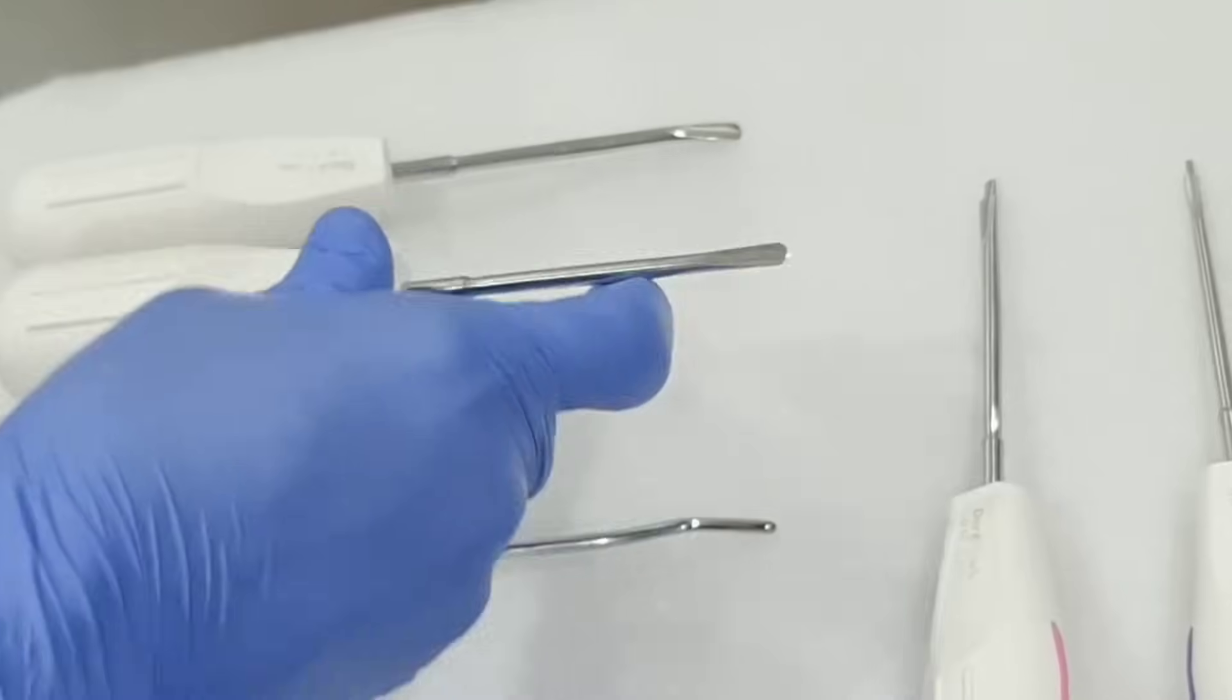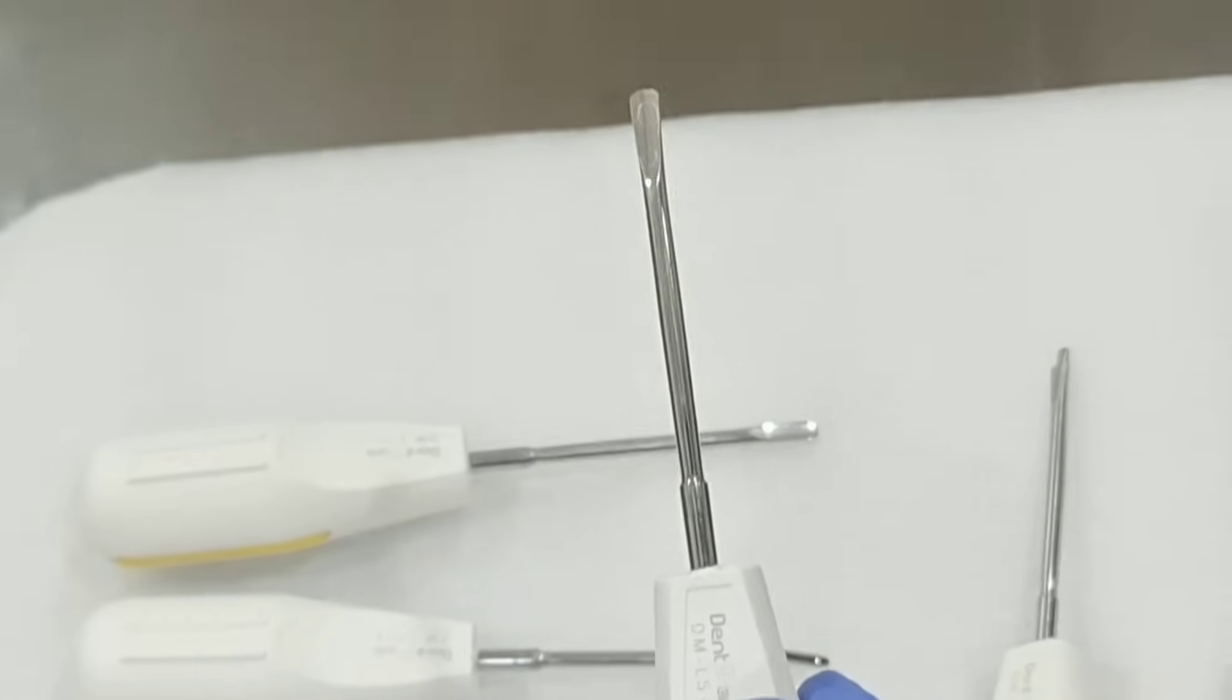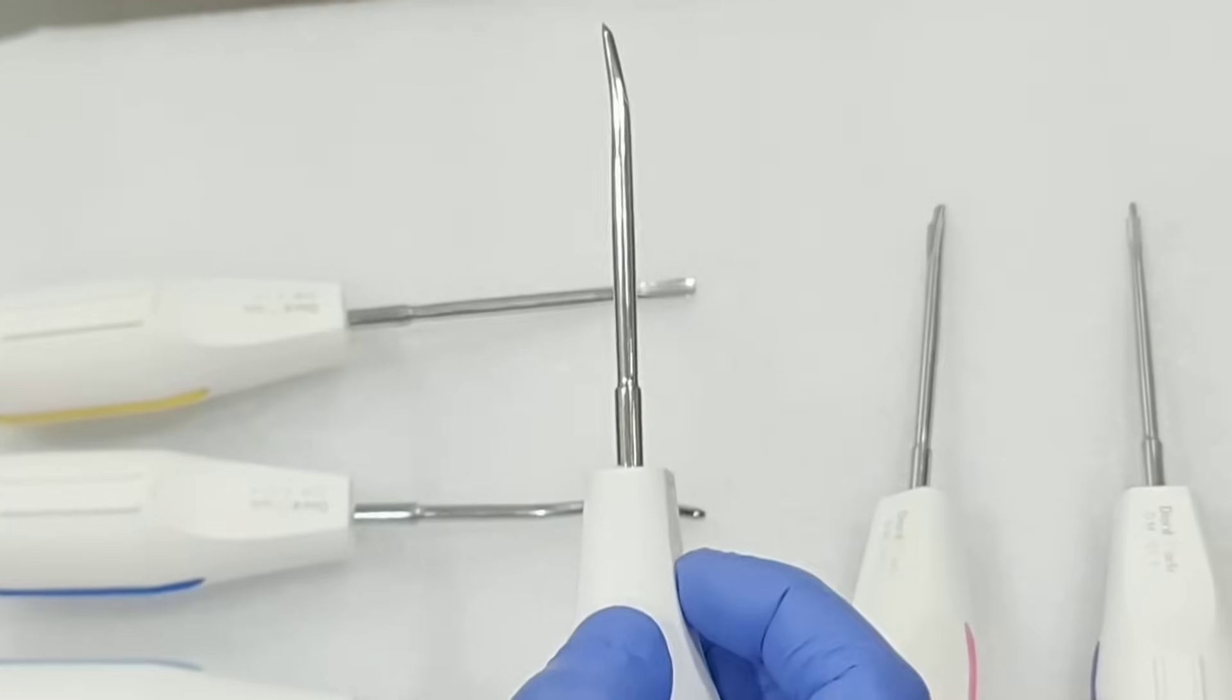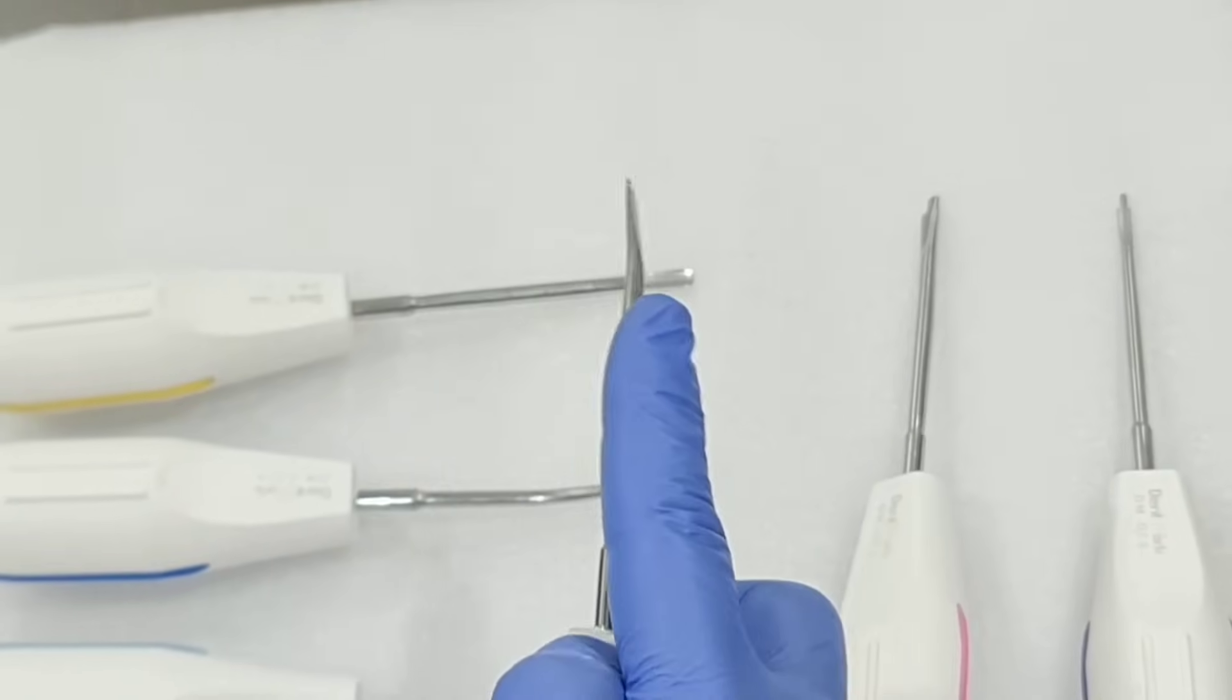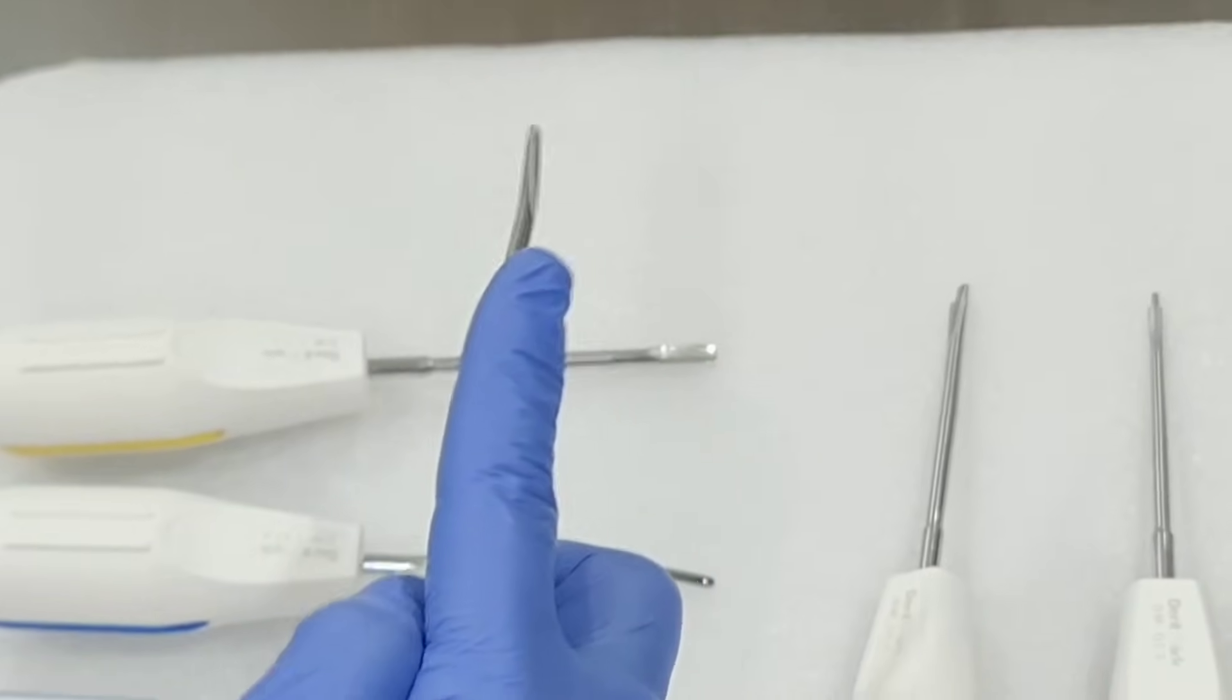It is used for interproximal. And this is L5C, curved 5mm head, and it is curved. This is used for large molar roots.